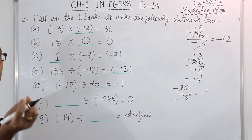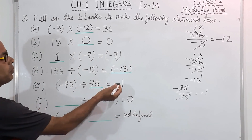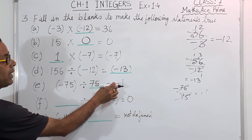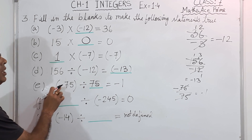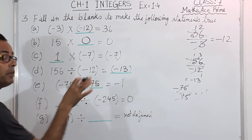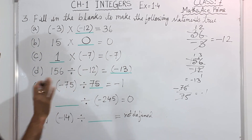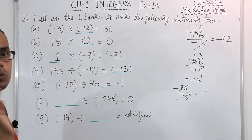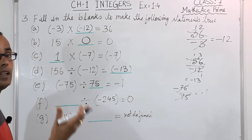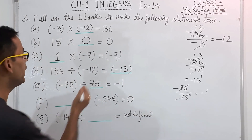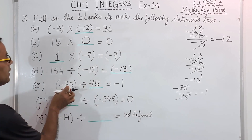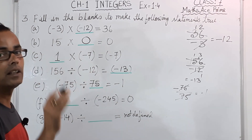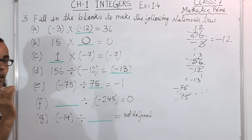Students will make some mistakes here. They will think: to bring minus 1, let me divide by minus 75. But the answer is minus 1, so you have to keep the minus sign — you cannot cancel it. If you divide minus 75 by minus 75, the answer will be 1, but here the answer is minus 1. Be very careful about this.